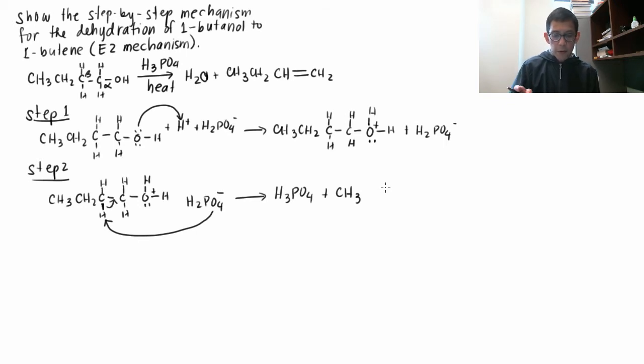No, no, no, this is the E2 mechanism: CH3CH2CH=CH2. So the mechanism is E2 because this here is the slow step, and this slow step involves two species, the H2PO4- and this here, two species. So therefore E2, elimination bimolecular slow step.